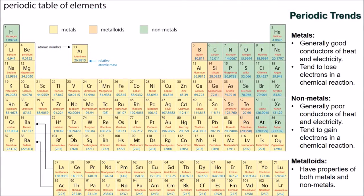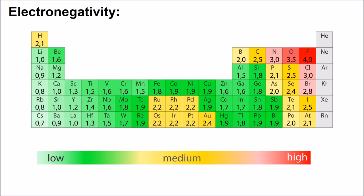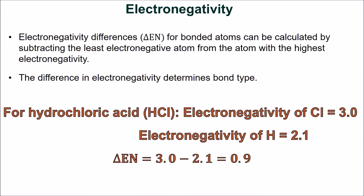The periodic table is organized to aid chemists in determining helpful information about elements, such as atomic radius, electronegativity, and ionization energy. Learning this information and recognizing the periodic trends helps us to understand why elements combine in certain ways and have certain properties. Electronegativity is the ability of a bonded atom to attract electrons. On the periodic table, electronegativity decreases moving down a column, and electronegativity increases moving across a row. Electronegativity differences for bonded atoms can be calculated by subtracting the least electronegative atom from the atom with the highest electronegativity.